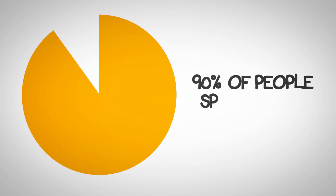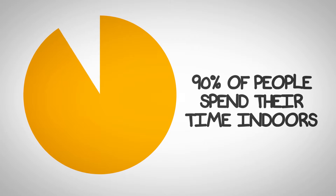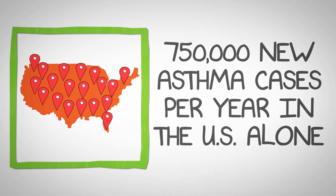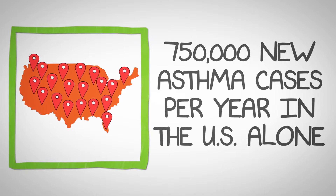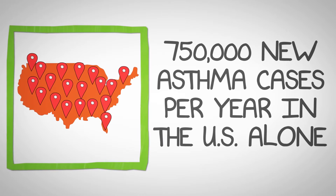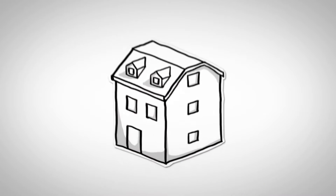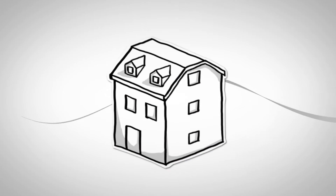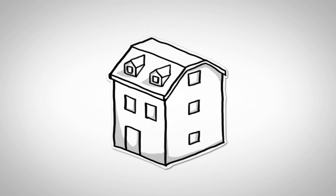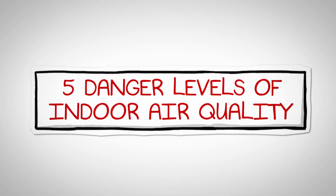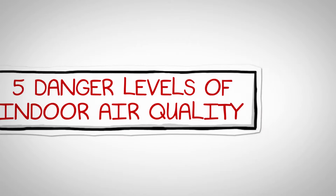Did you know that people spend 90% of their time indoors? This is actually growing due to many societal impacts. Did you know that there are 750,000 new asthma cases per year in the US alone? Homes are also built tighter and far more energy efficient than they used to be, making fresh clean air in homes harder to get. Let's take a few minutes to dissect these five danger levels and explain exactly what we're dealing with in our homes.